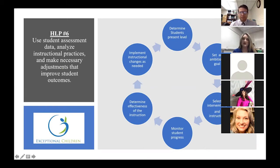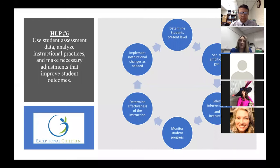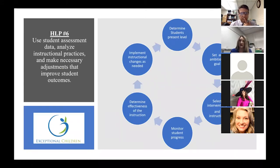Now we'll take a look at high leverage practice number six. This graphic talks about that continuous cycle: we look at a student's present level, set a goal, choose interventions and instruction to support learning of that goal, and then monitor progress. It's the same as the continuous teaching and learning cycle, but helping special educators understand that it's around IEP goals and objectives.